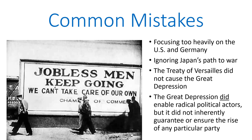I would like to begin by exploring what I see as common mistakes in both the way that this material is taught when it is taught quickly, and also some common misperceptions that students form based on going through this material rapidly. One common mistake in the way that this material is presented in a number of textbooks is that the account focuses far too heavily on what is going on in the US and in Germany during the interwar years at the expense of all of the other players. The player which gets ignored the most, by a long shot, is Japan.